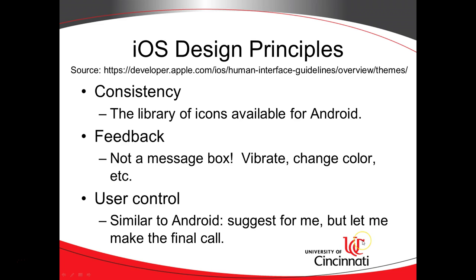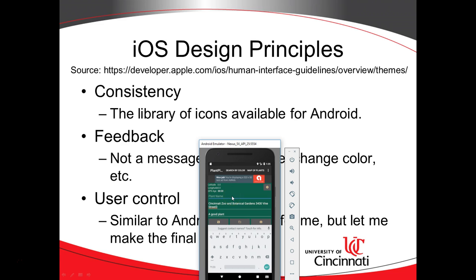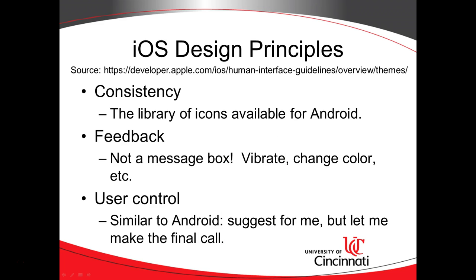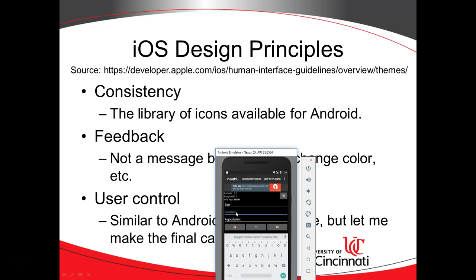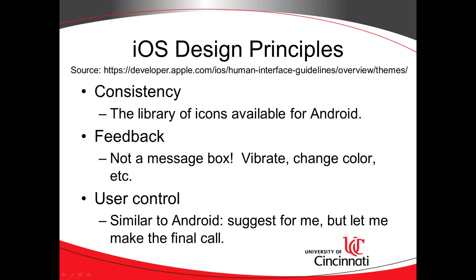User control: suggest for me but let me make the final call. This is big with both iOS and Android. If possible, can we do an autocomplete? I can start typing a plant name and it autocompletes, or I can start typing a location like the Cincinnati Zoo and it will autocomplete so I can select it. We could even go one step further and use latitude and longitude to determine where I am and suggest nearby locations — similar to how Facebook suggests check-in locations.